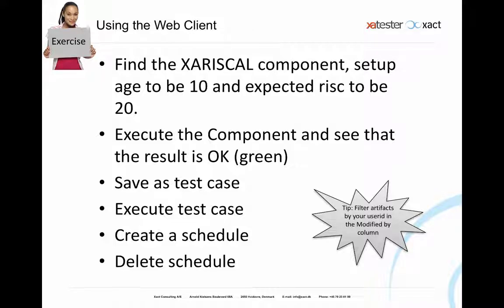Now it's your turn. Use the web client to find the XA RISCAL component, set up execution with age 10 and expected value 20, execute it, verify the result is green, and save it as a test case. In the test case part of the repository, try to execute it. Then create a schedule and finally delete the schedule. The schedule is created by clicking the edit button and then the create schedule button. Since many people may be taking this course, a tip is to filter artifacts by your user ID in the modified-by column of the test case repository to easily find your test case.